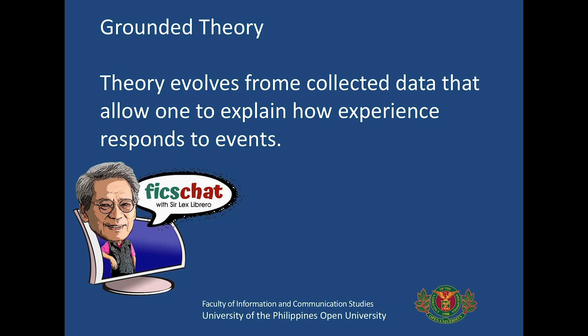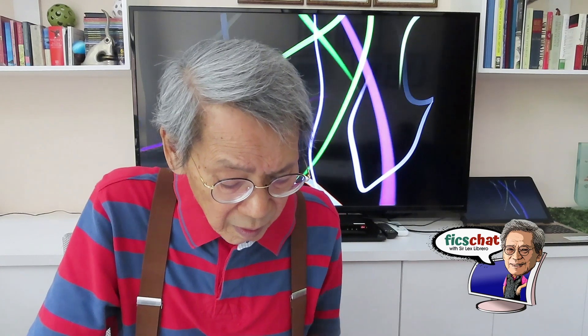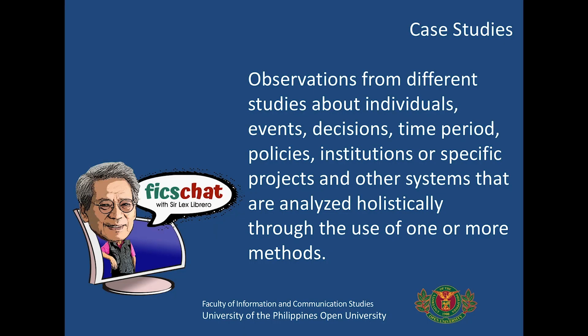A third methodology is what we refer to as grounded theory. In grounded theory, you collect data that would allow you to explain how experience responds to events. You look at data and the experience and events that transpire, and you make observations from these different data sources. Then you have the fourth one: case studies.